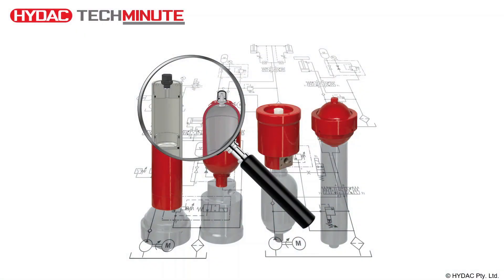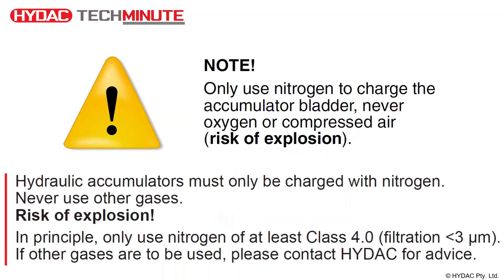In the vast majority of hydro-pneumatic accumulator applications, nitrogen gas is used as a pre-charge. But what is the reason that nitrogen is used? The answer is because it is clearly stated in the safety instructions that if nitrogen is not used, there is a risk of explosion. However, let's look a little bit more closely at the inner workings of a hydro-pneumatic accumulator to understand this.